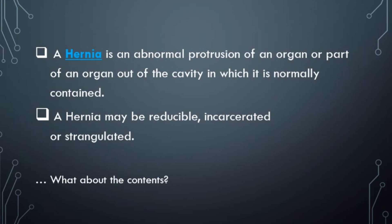A reducible hernia, as the name suggests, is easily reduced. An incarcerated hernia can be reduced, but the blood supply is intact. While in a strangulated hernia, the blood supply is compromised, so it needs emergency surgery.